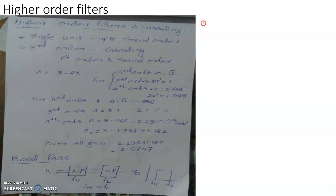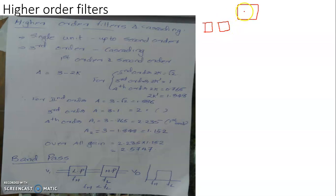The first method of increasing the number of passive filtering units associated with the active filter is not a very suitable method for constructing higher order filters. For a first order filter, you have a first order passive filtering unit associated with the active component, that is the amplifier. For a second order filter, a second passive filtering unit is connected in series with the first, modifying it into a second order low pass or high pass filter.